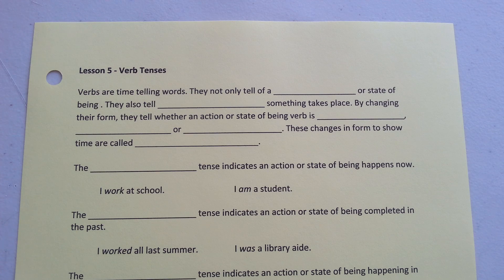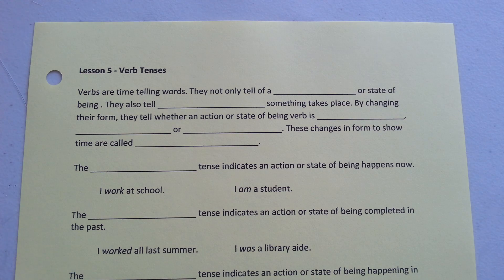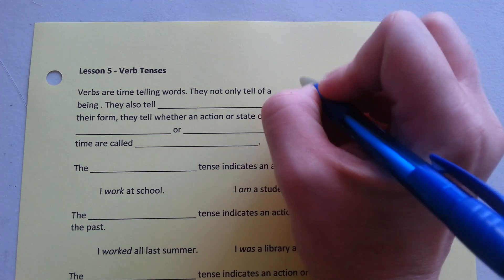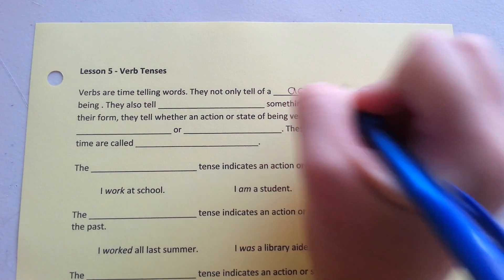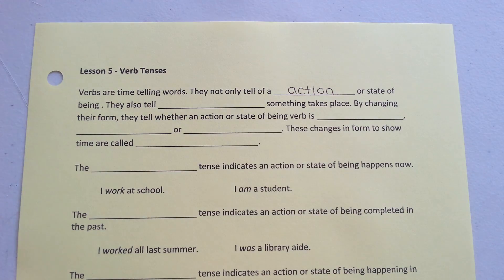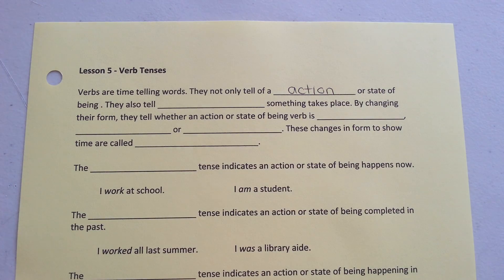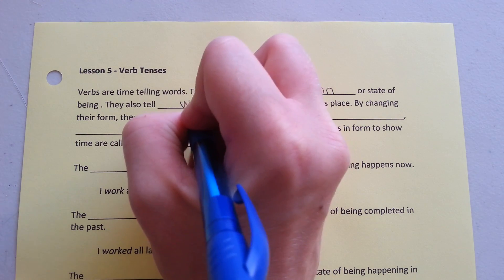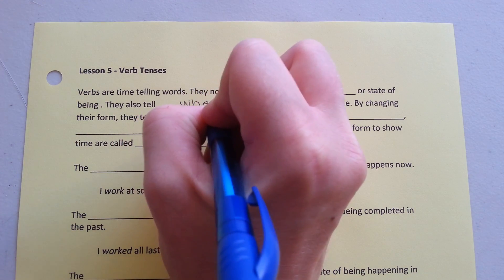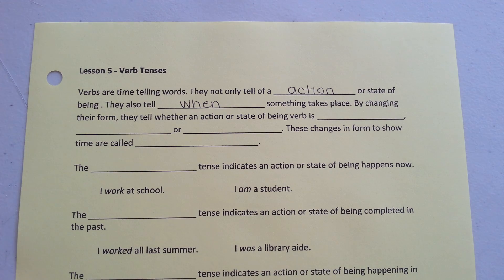Lesson five: verb tenses. Verbs are time-telling words. They not only tell of an action or a state of being, they also tell when something takes place.